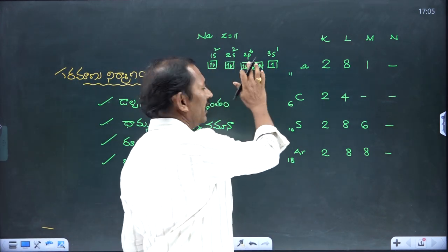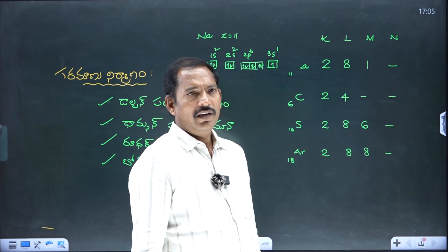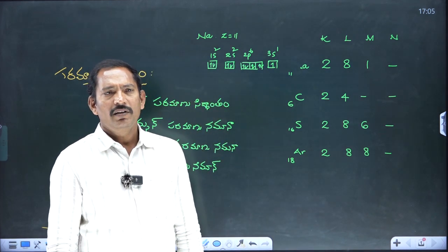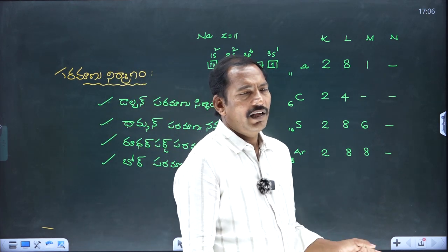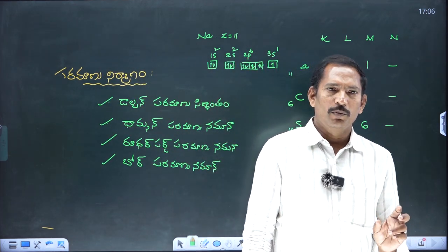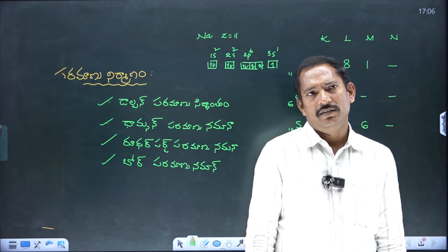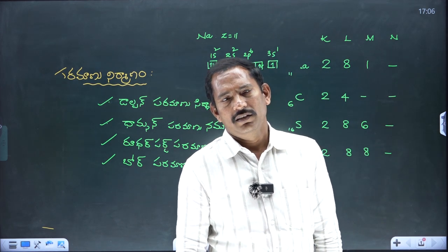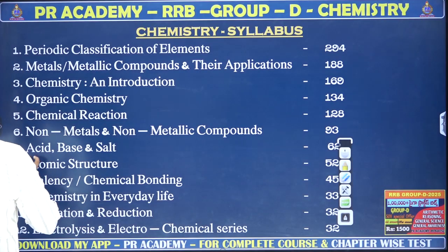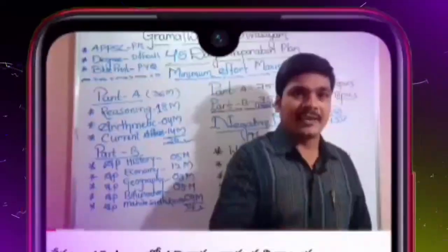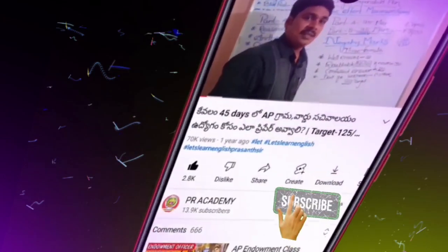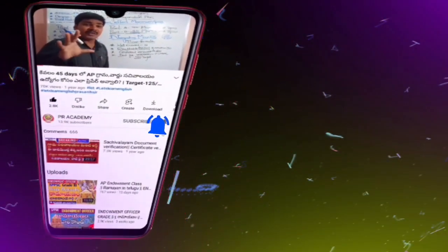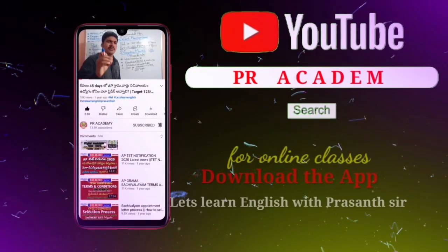The next chapter covers isotopes and isobars. In this chapter, we will learn about isotopes and isobars. The main learning outcomes for this chapter are important. Thank you, friends.